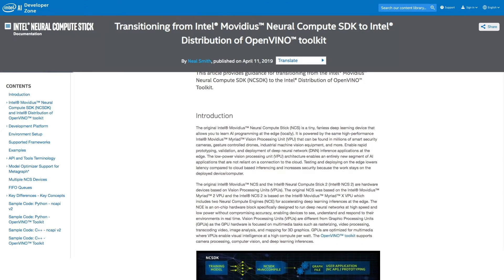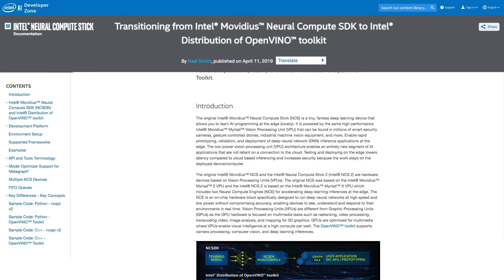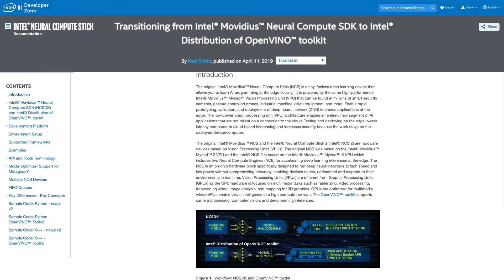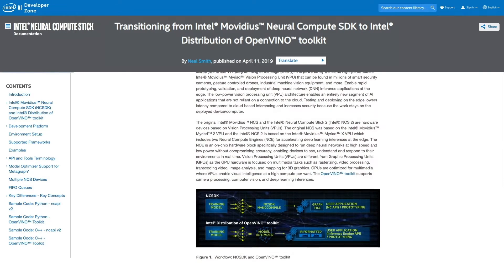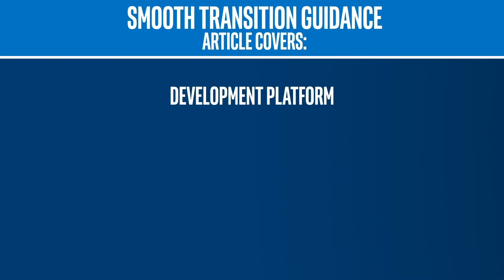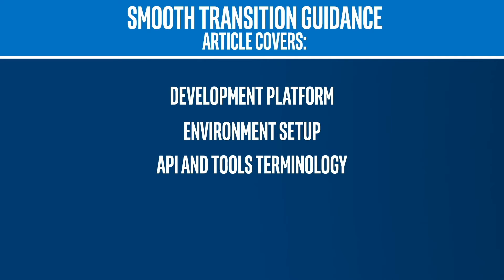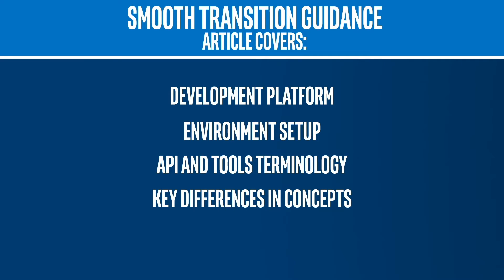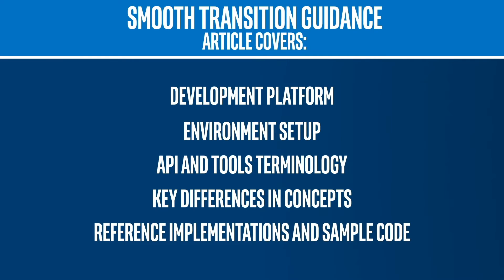If you've been using the Intel Neural Compute SDK and want to make the switch, the information in this article will make the transition easy. It will walk you through everything from the development platform, the environment setup, API and tools terminology, key differences and concepts between the NCS SDK and the toolkit, as well as a few reference implementations and sample code to help get you going.